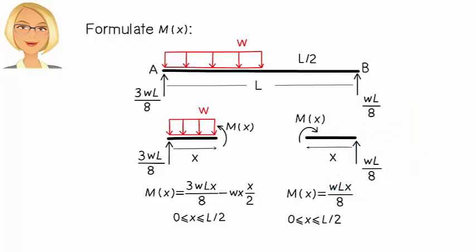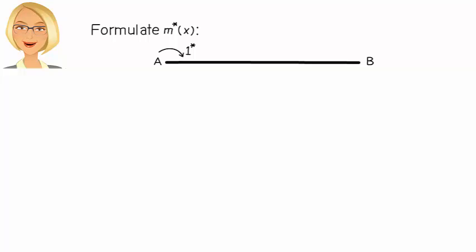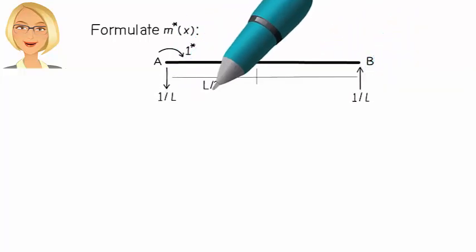To write M star x, we remove the applied load and place a clockwise virtual unit moment at A, like this. So the beam's bending moment equation becomes...